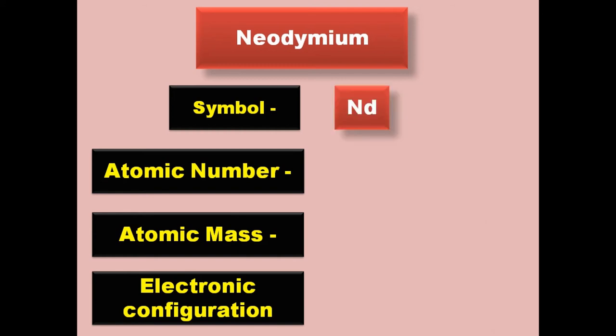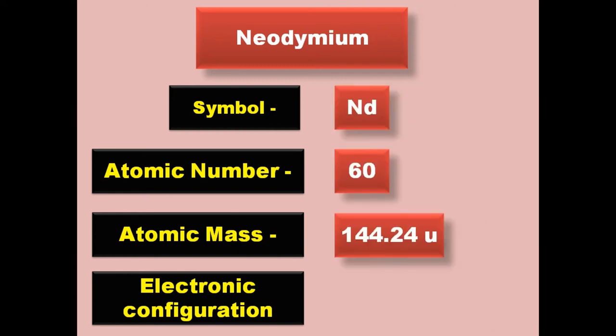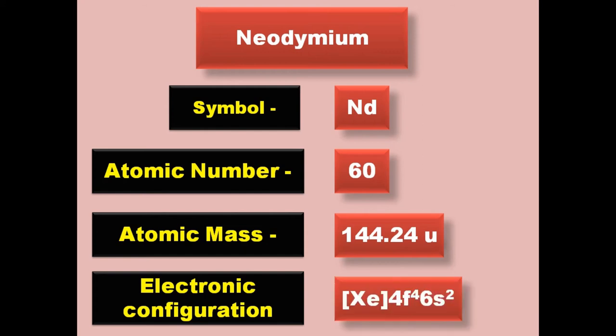Neodymium has symbol Nd, atomic number 60, atomic mass 144.24, electronic configuration [Xe] 4f4 6s2. Neodymium is a lanthanide and exists in solid form at room temperature.